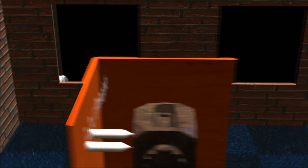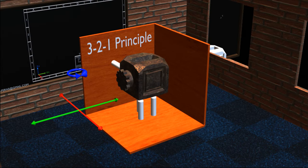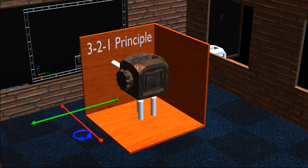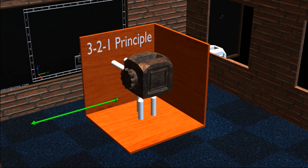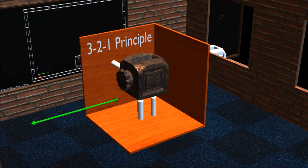Now we will place two points onto the object as seen on the screen. With these two points, the object cannot rotate about the Z axis, and also it cannot move along the X axis. Which means we have constrained the Z rotational motion and X transitional motion. But as you can see, the object can still move along the Y axis.